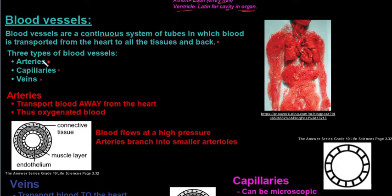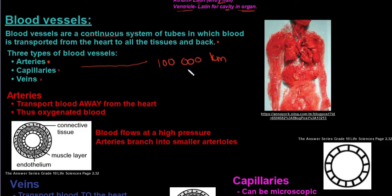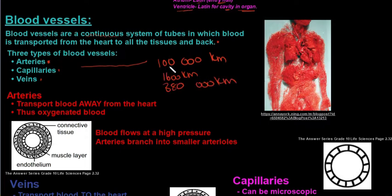If you take all three types and connect them end to end, that would be over a hundred thousand kilometers long. For comparison, from Vitbank to Cape Town is only around 1,600 kilometers, and from the Earth to the Moon is around 380,000 kilometers — so all the blood vessels in the human body extend almost a quarter of the way to the Moon. That is extremely vast.